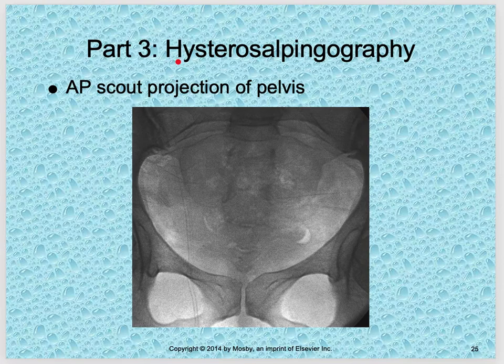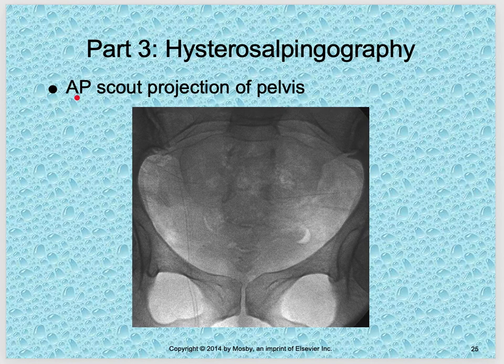So part two is just a review — make sure you go back and look at that in our earlier chapters. Moving on to part three: the hysterosalpingography, and the scout AP pelvis projection. This is your initial picture; before the radiologist comes in, you're going to take an AP image of the pelvis — you may cone down a little bit or take the entire pelvis.